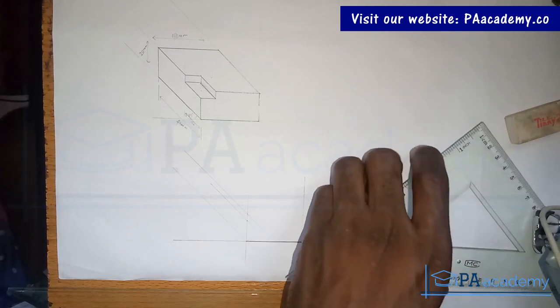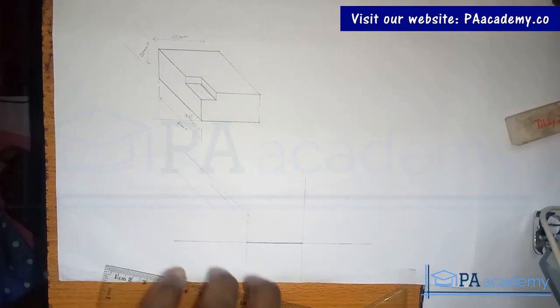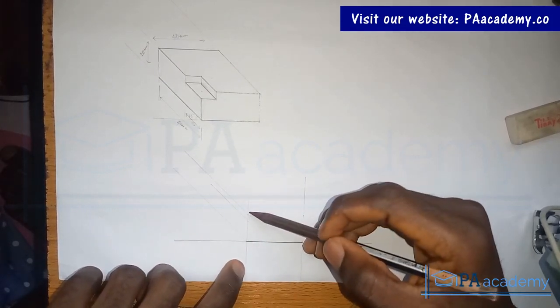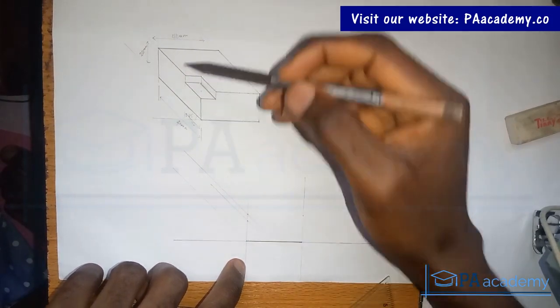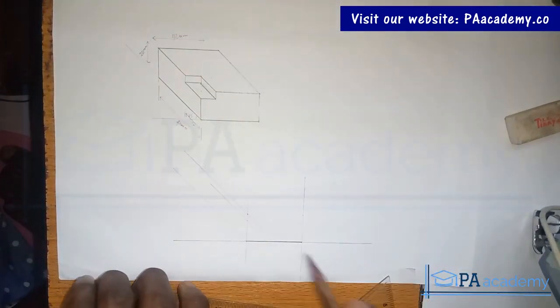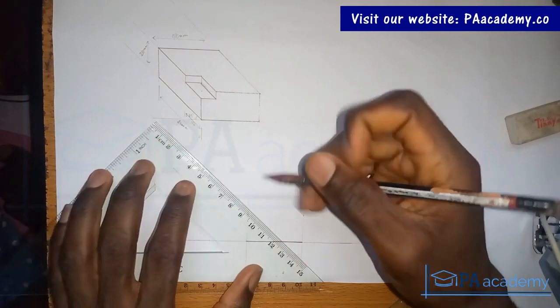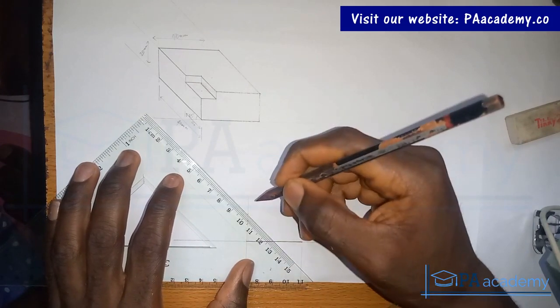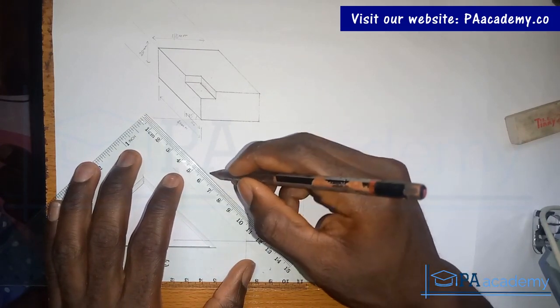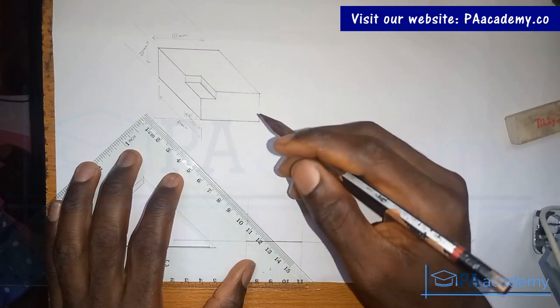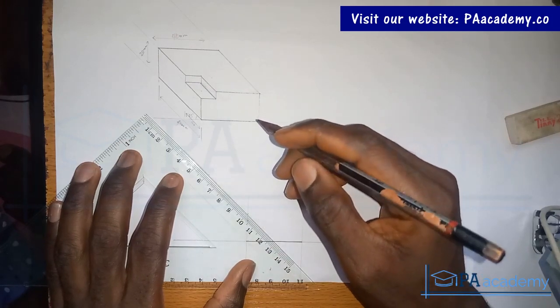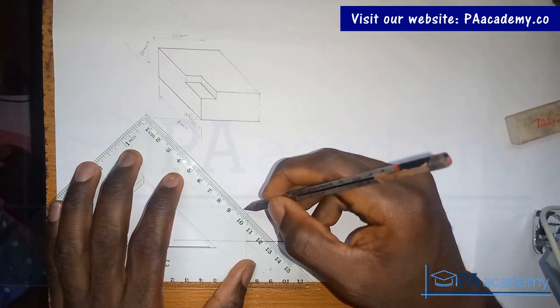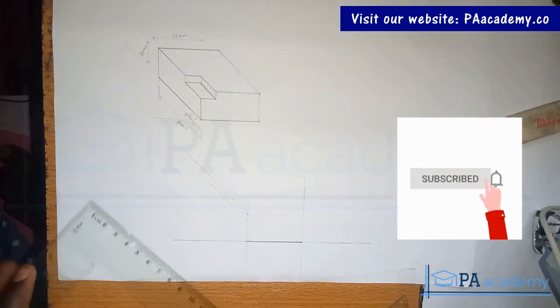Since I know that the length from here to here is 40 millimeters, let me just measure that real quick - one, two, three, four. That's 40. Also from here to here is 15, so let me mark that point, which is 1.5 centimeters.